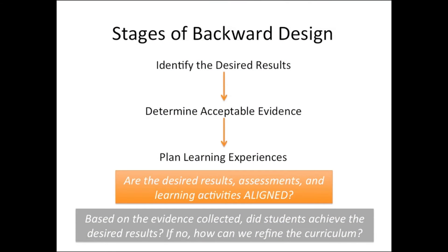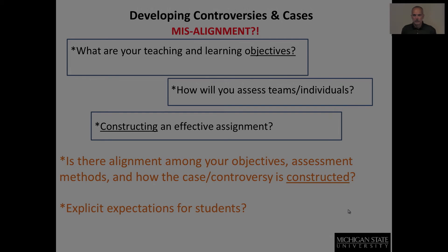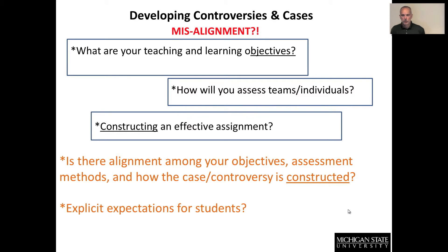These are the basic ideas involved in backward course design — pulling apart those three elements, doing them in a certain order, and aligning them. As you're developing a course and thinking about cases or controversies as a way to meet certain teaching and learning objectives, one of the reasons we stress backward design is to look for misalignment: are your teaching and learning objectives in line with how you're going to assess teams and individuals to ensure accountability and help you construct an effective assignment, case study, or controversy?